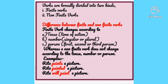Consider: 'I enjoy painting,' 'I enjoyed painting,' 'Rita paints a picture,' 'Rita painted a picture,' 'Rita will paint a picture.' The main verb is 'paint' and it changes according to tense — simple present, simple past, and future tense. All these verb forms change according to tense, so this is a finite verb.